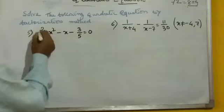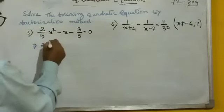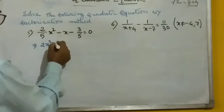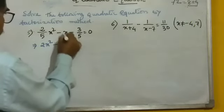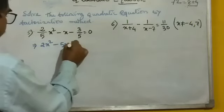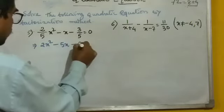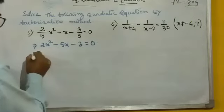After multiplying by 5, the 5 cancels to give 2x squared. Minus 5x here. And 5 cancels to give 3. So we get 2x squared minus 5x minus 3 equal to 0.